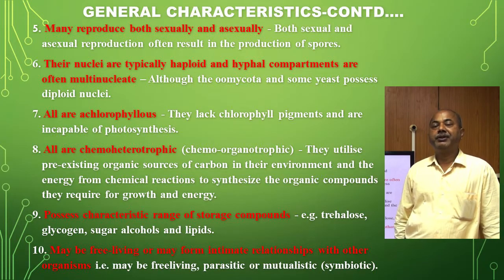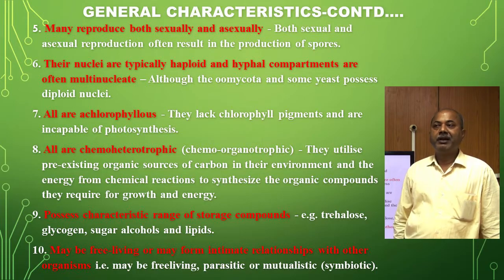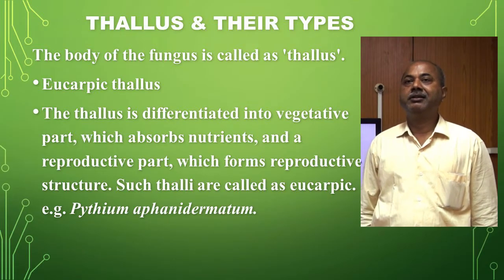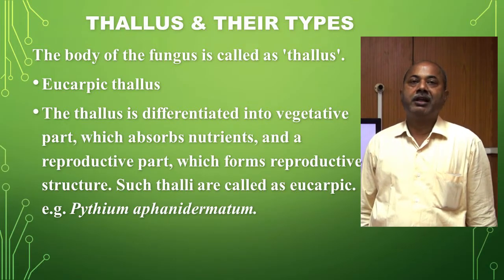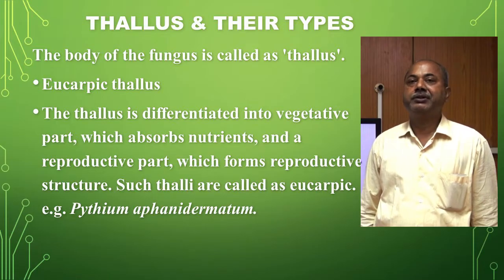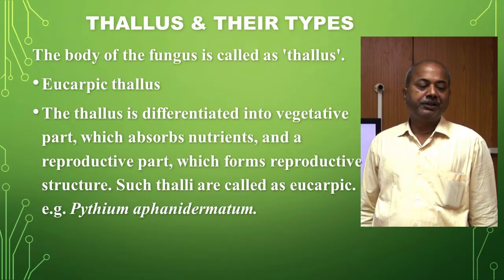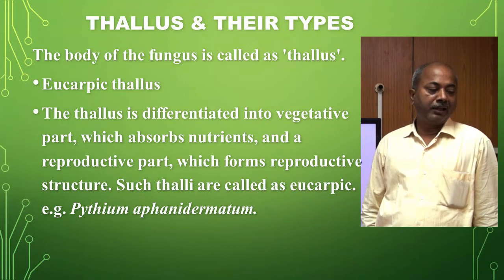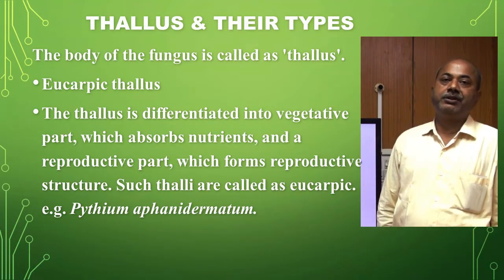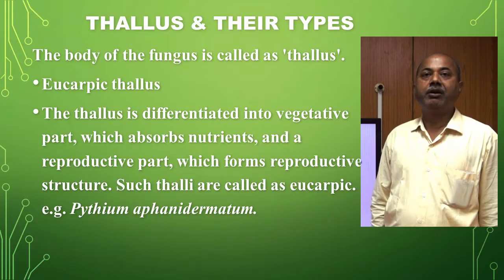Fungi also form mutualistic relations between the roots of higher plants. Regarding the fungal thallus, the word thallophyte came from organisms which have no differentiated root, stem, and leaf. Undifferentiated plant parts are known as thallus, and the body of the fungus is known as thallus. Thallus is of two kinds: eucarpic and holocarpic.